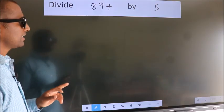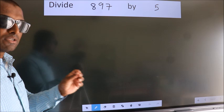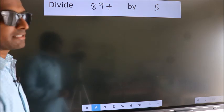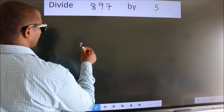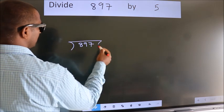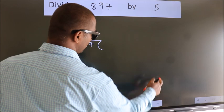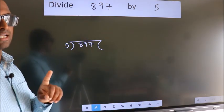Divide 897 by 5. To do this division, we should frame it in this way: 897 here, 5 here. This is your step 1.